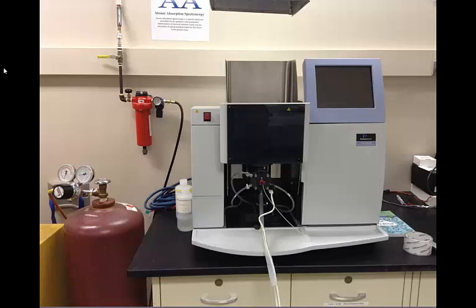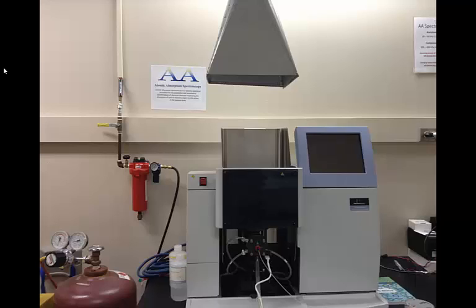Our atomic absorption spectrophotometer is a Perkin Elmer Analyst 200. This instrument shows all of the hallmarks of an atomic absorption spectrometer. You will note that there is a ventilation hood above the instrument. This is very important because it prevents heavy metals from being spread throughout the lab.